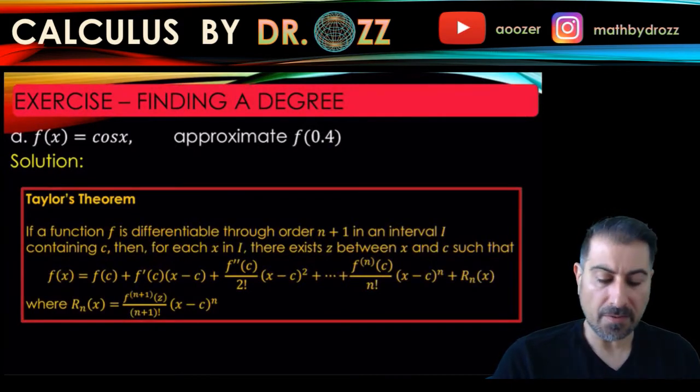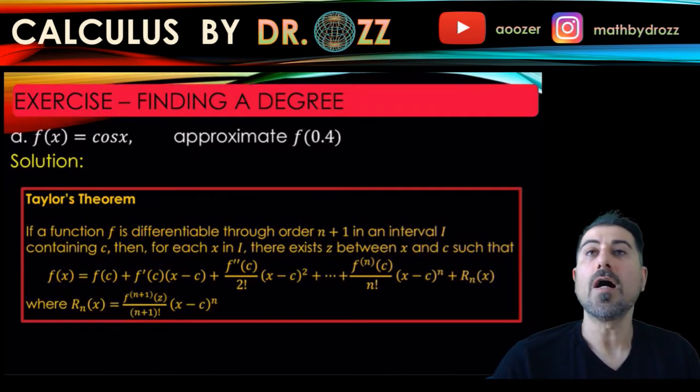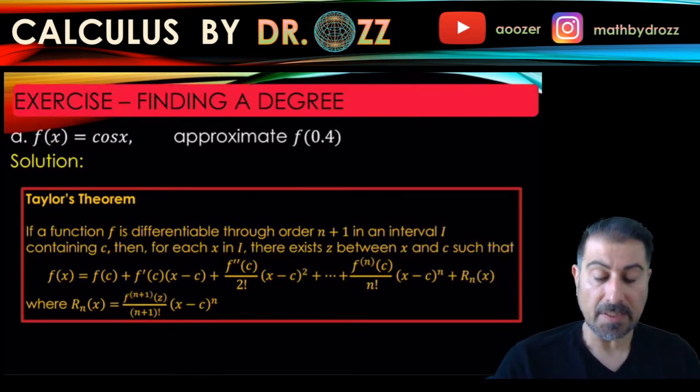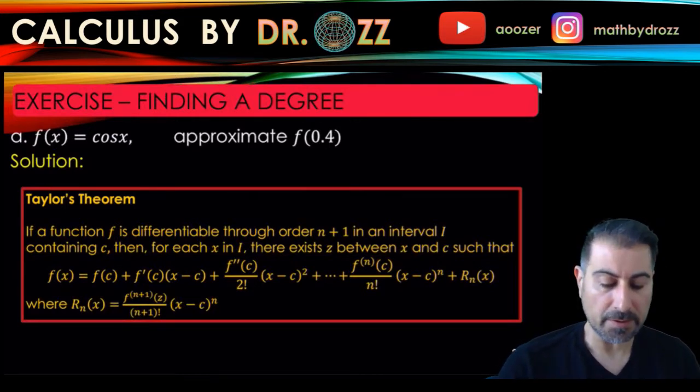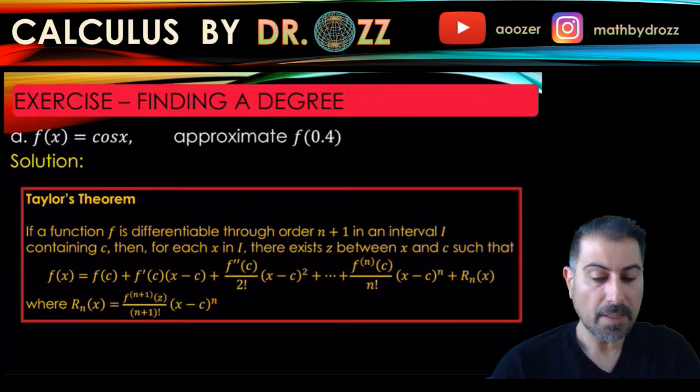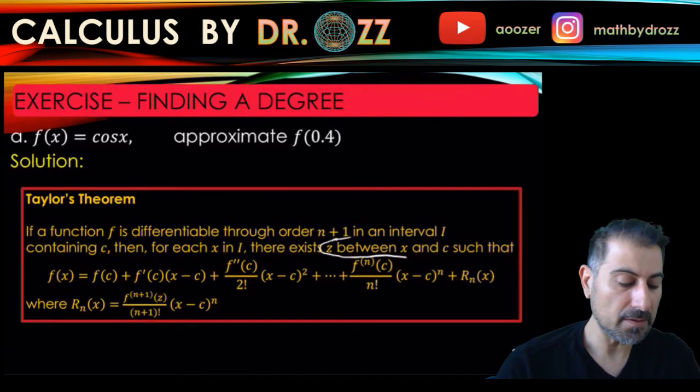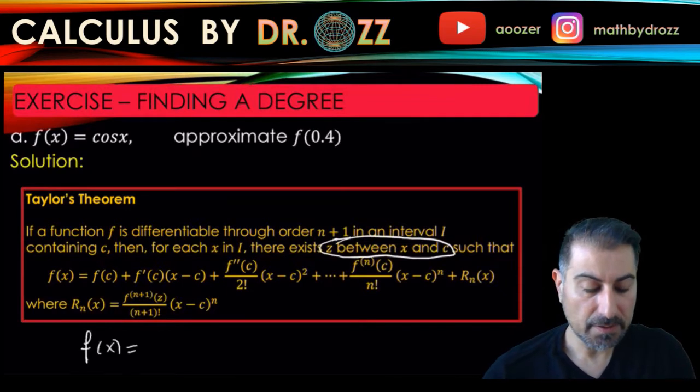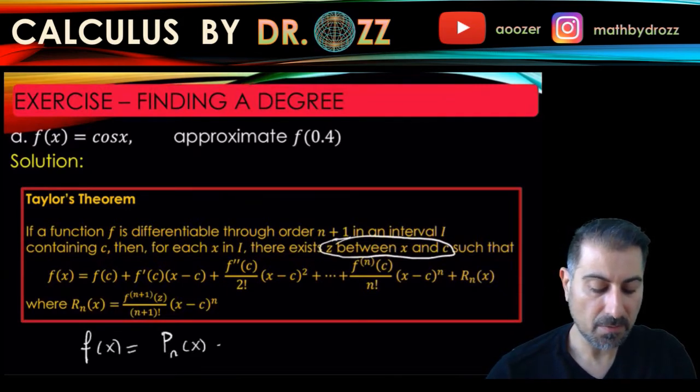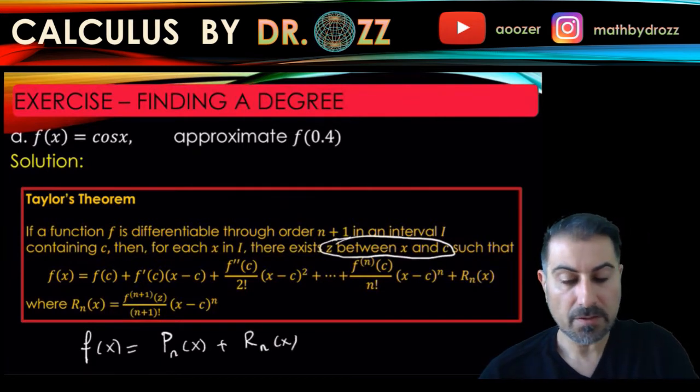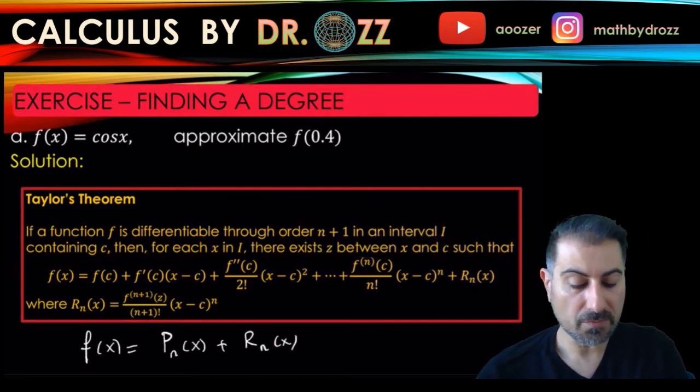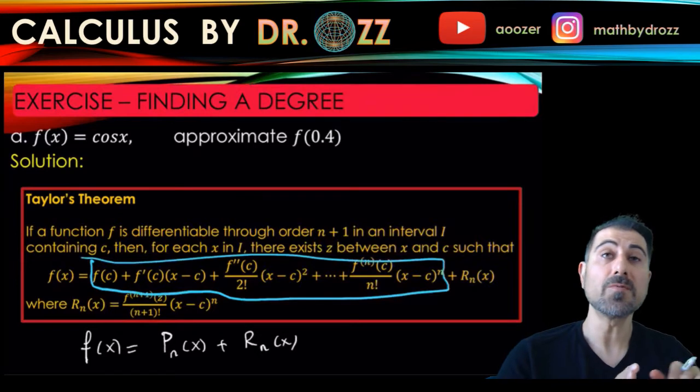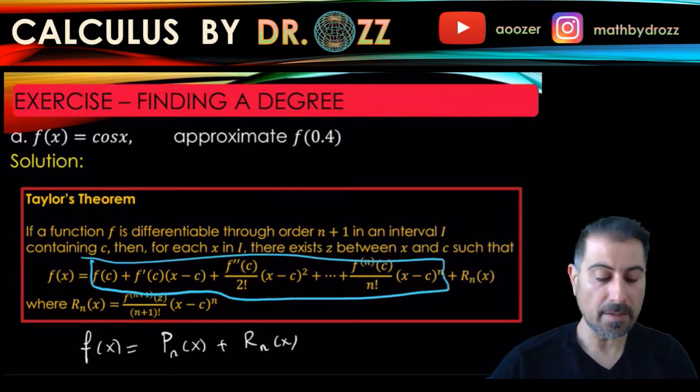So the Taylor's theorem says that if you have a differentiable function up to the order n plus 1 in an interval i containing c, c is the point where you expand the function into the Taylor's expansion. Then there exists a z in between x and c, such that f of x is in fact written as the summation of p sub n of x and r n of x. So in fact, this part of the sum is just the Taylor's expansion of the function at c, and the rest, what we call the tail, is called r n of x here.